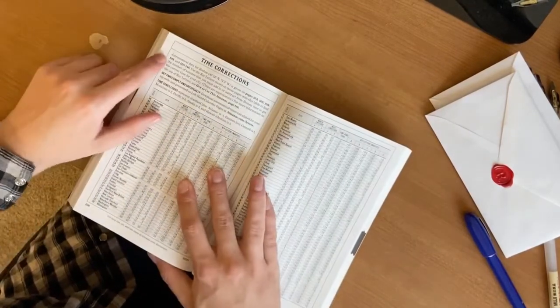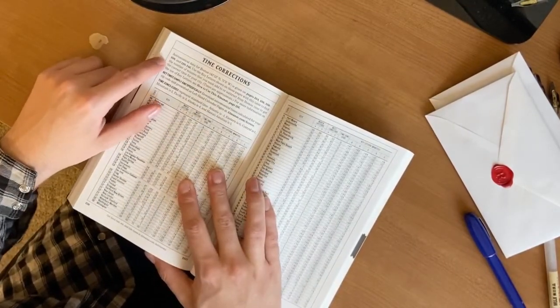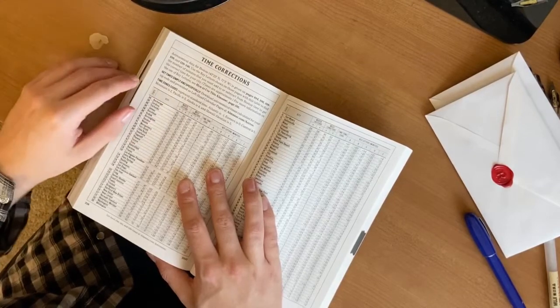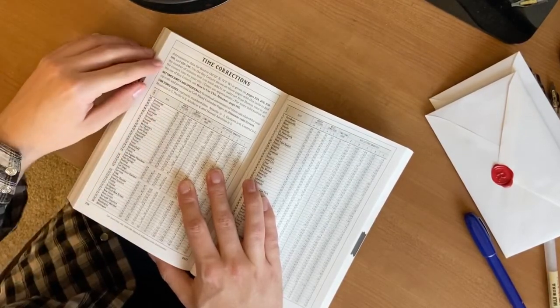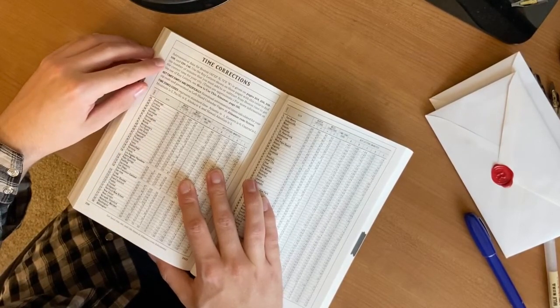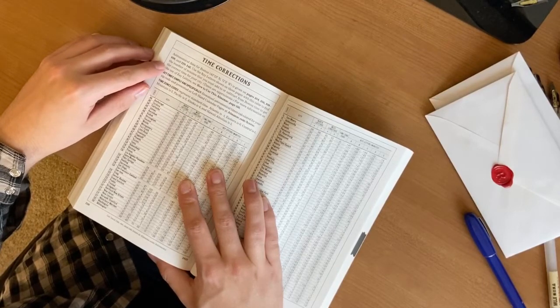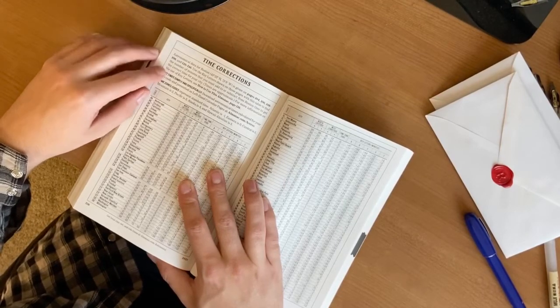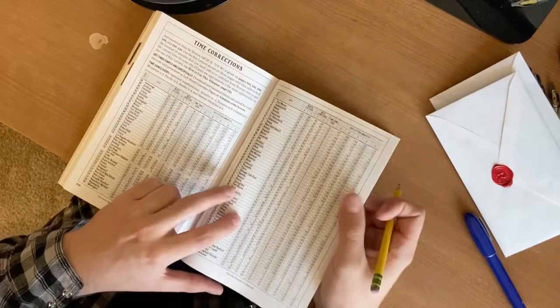Time correction, there we go. Astronomical data for Boston is given on pages 104 to 146. Use the key letters shown on those pages with this table to find the number of minutes that you must add or subtract from Boston time to get the correct time for your city.